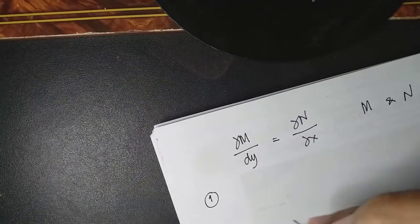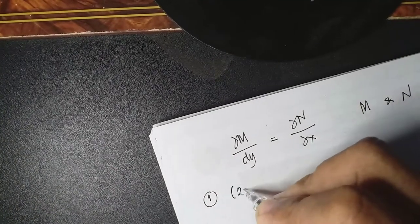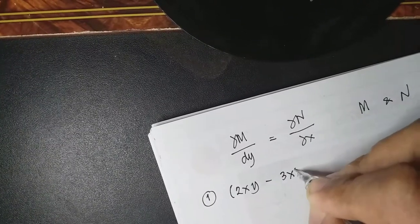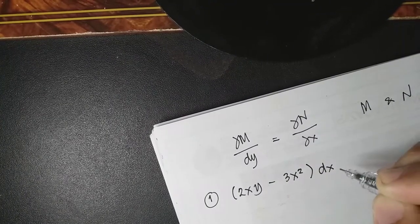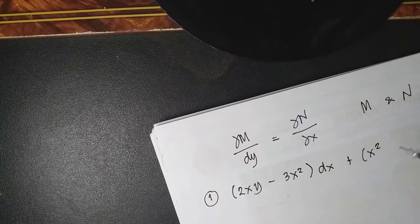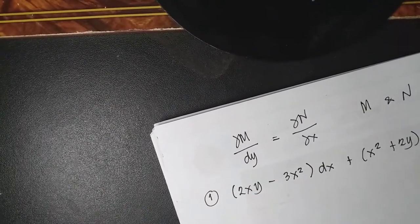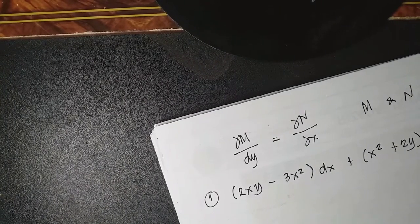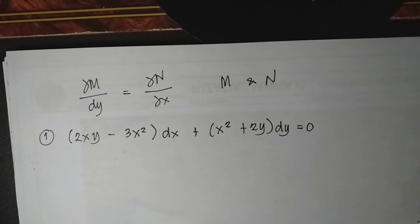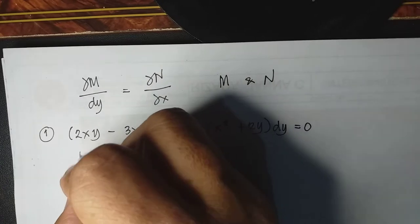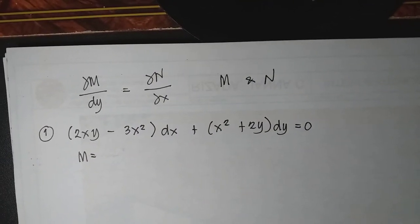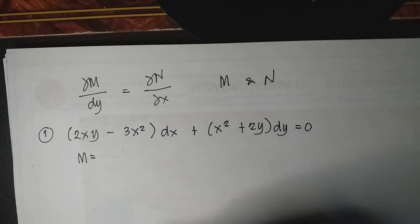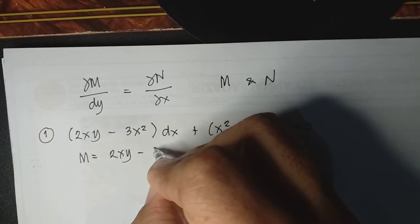To illustrate this further, let us have Example 1: Test for the exactness and find the complete solution of the equation (2xy minus 3x²)dx plus (x² plus 2y)dy equals zero. The first part of the solution for an exact differential equation is to test for exactness. Let's determine the value of M. M is always with the dx term, so M equals 2xy minus 3x².